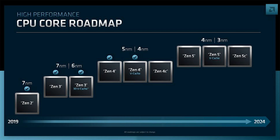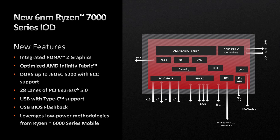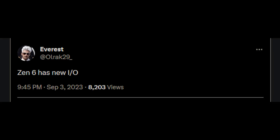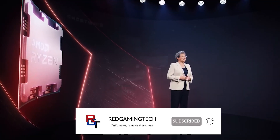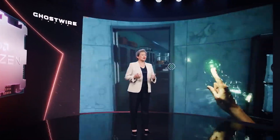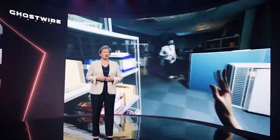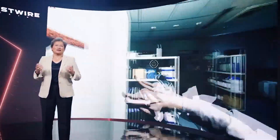I'm told the IO die from Zen 4 is returning with the Ryzen 8000 series (Zen 5 for desktop), but Zen 6 takes a very different approach. There seem to be significant changes to the chip's interconnects and the way infinity cache is handled, which should give the chip more bandwidth — Ulrak recently hinted at this on Twitter, and my sources indicate he's correct. However, my sources are being very coy about exactly how it works, partly because the more specific information shared, the easier it becomes to identify who said what.